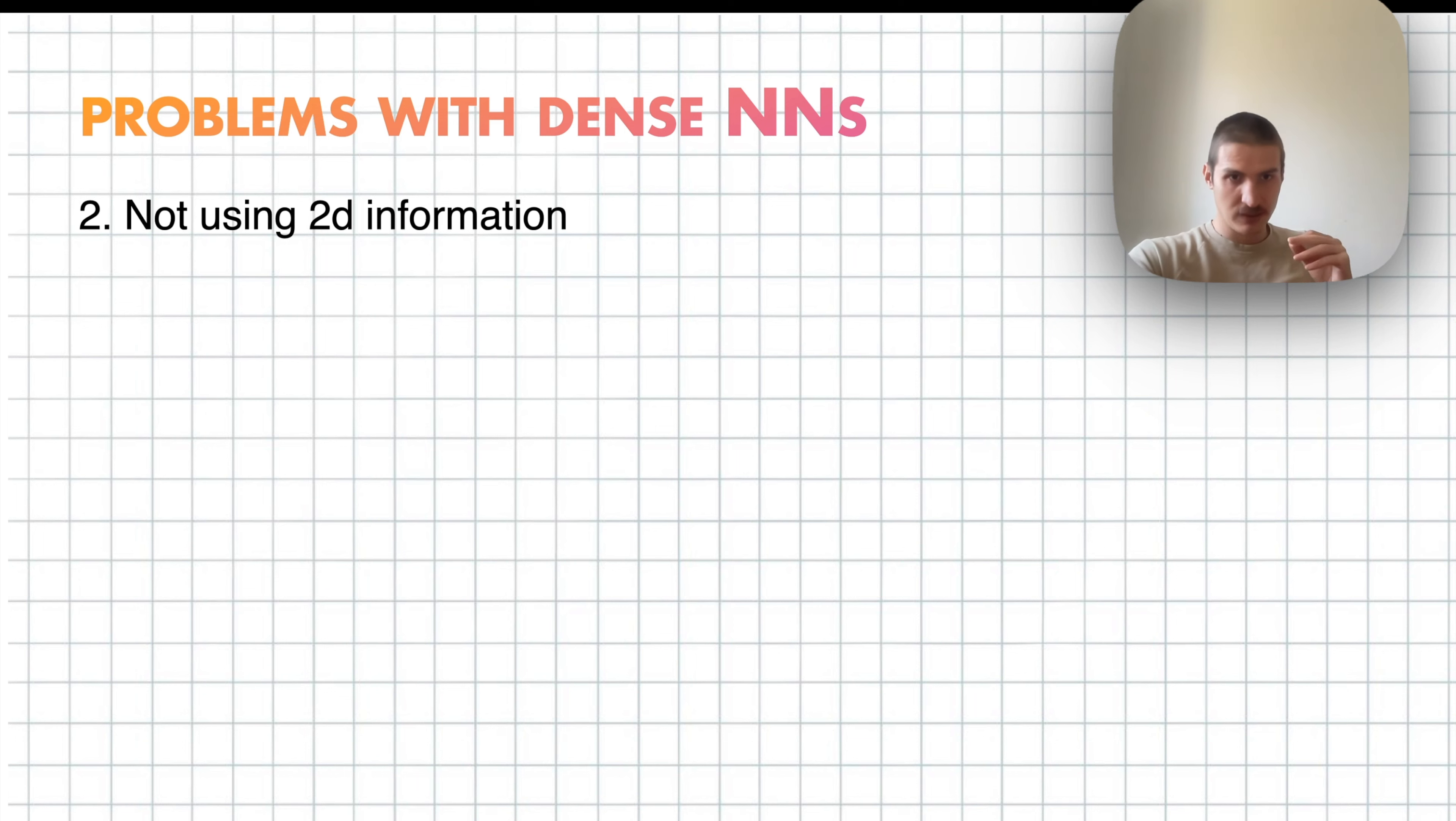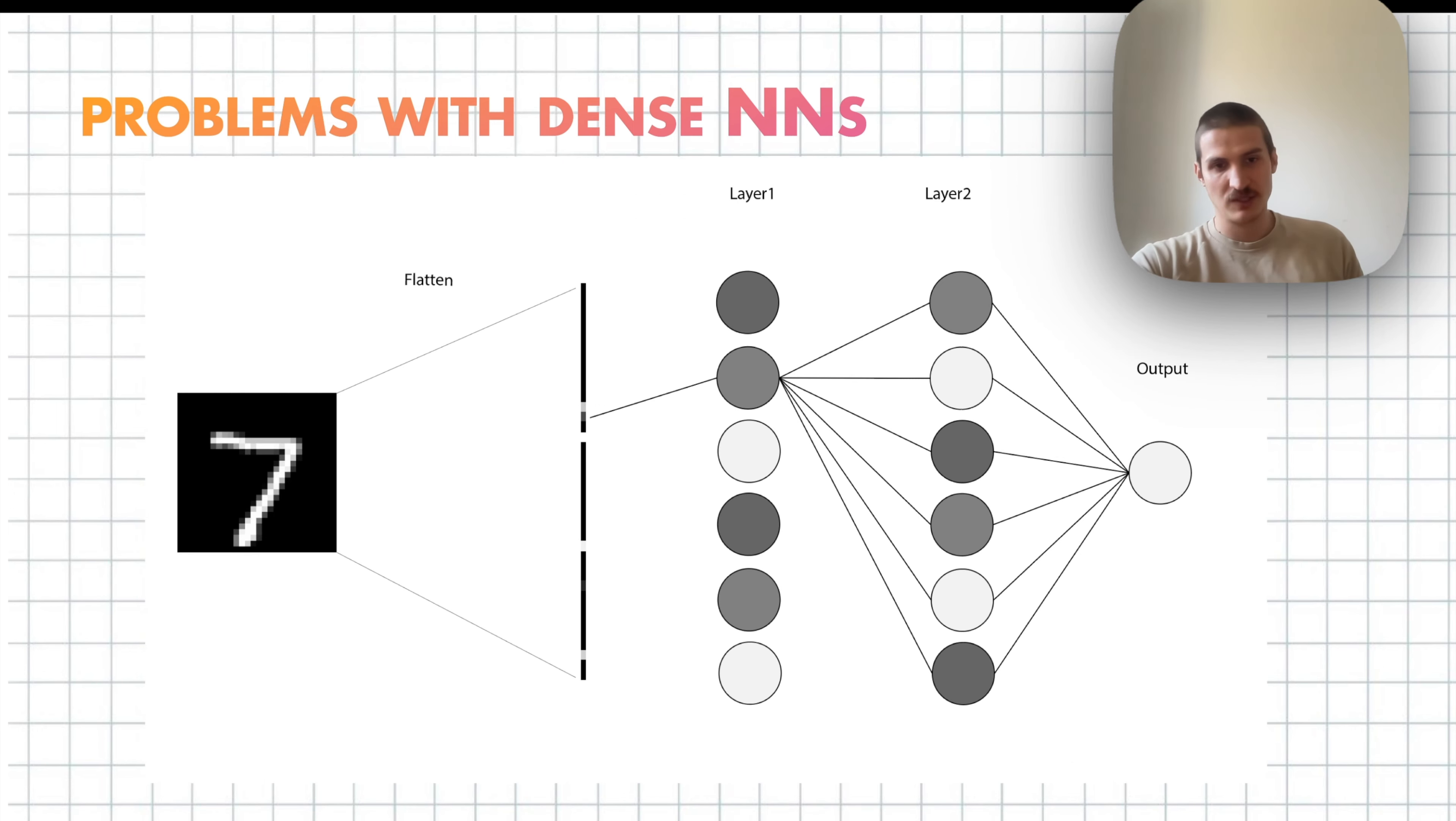Second problem is that 2D information is important. This is how humans recognize images. And we don't use it in the network. So literally, the first thing that we did was flatten out the image. So in 2D space, the concept of the number seven is quite simple. It's just one stroke, and then another stroke. And then in 1D, that's already sort of weird pattern of pixels that is much harder to recognize. And obviously, this is not good. We want our network to be close to humans in the terms of how it recognizes pictures, because humans do it well.